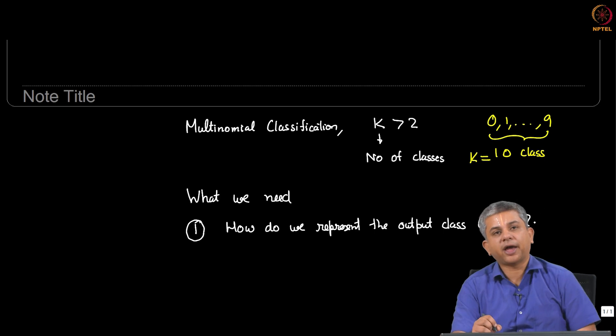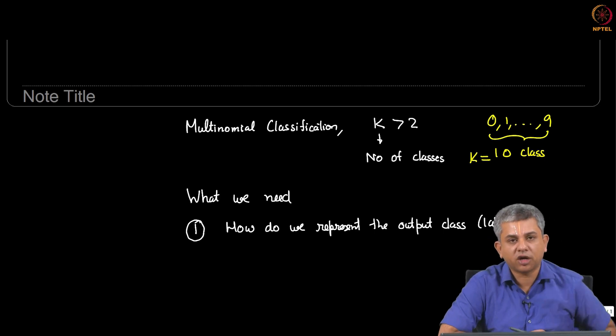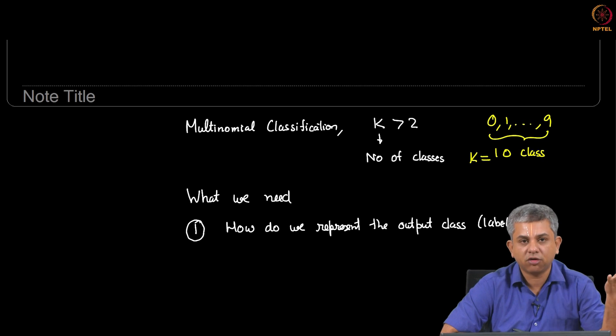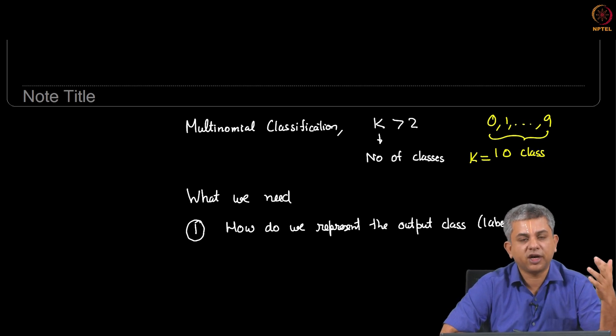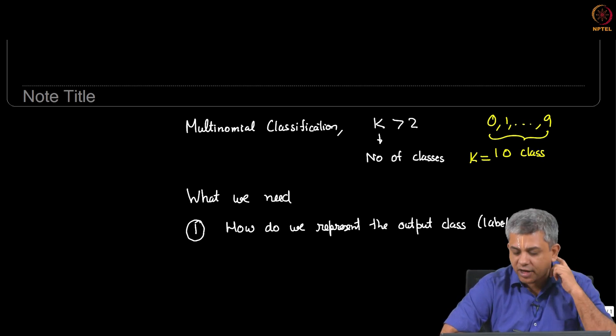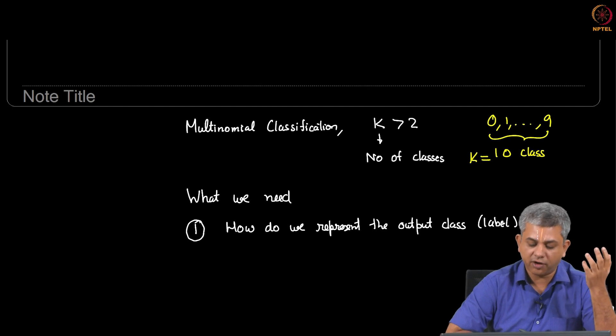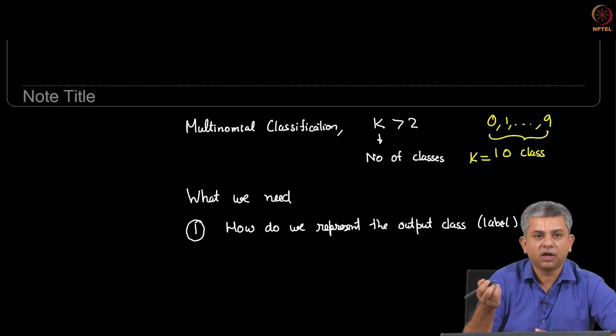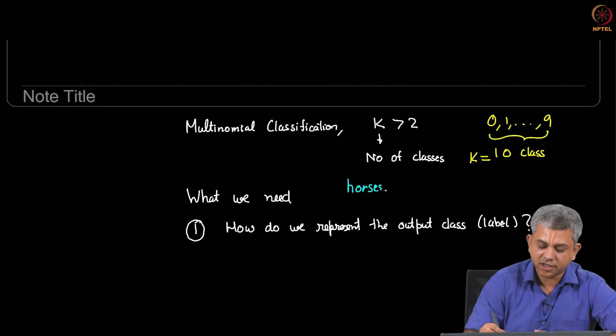For example, in binary classification, we simply decided if it belonged to one class, we would label it as 0. If it belonged to another class, we would label it as 1. Let us say we are dealing with a case where we are trying to label images and the three classes are horses, cats and dogs.